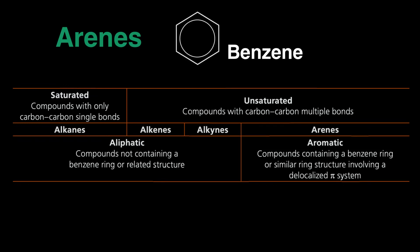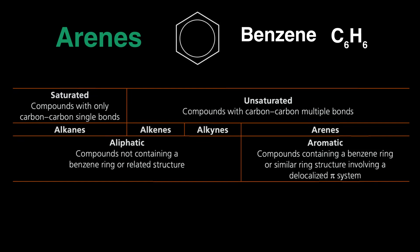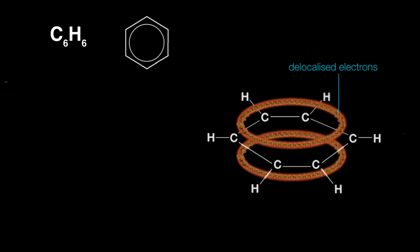Benzene has the formula C6H6. The molecule has six carbons arranged in a hexagon, each carbon bonded to the others just like cyclohexane, but each carbon is bonded to only one hydrogen instead of two. Each carbon makes three sigma bonds, and three sigma bonds means the geometry around each carbon is trigonal planar.